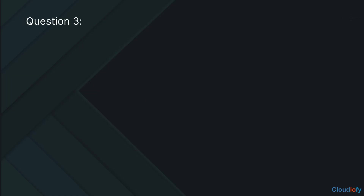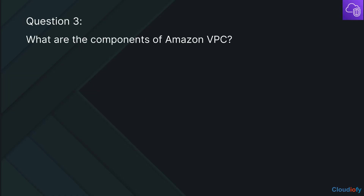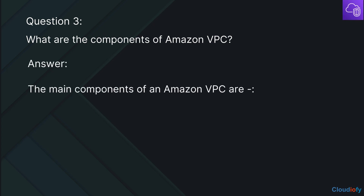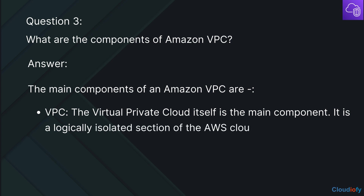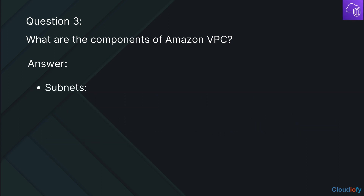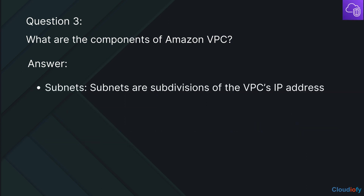The next question is: What are the components of Amazon VPC? The main components of an Amazon VPC are as follows. The VPC itself — the virtual private cloud — is the main component. It is a logically isolated section of the AWS cloud where you can launch AWS resources. Subnets are subdivisions of the VPC's IP address range.